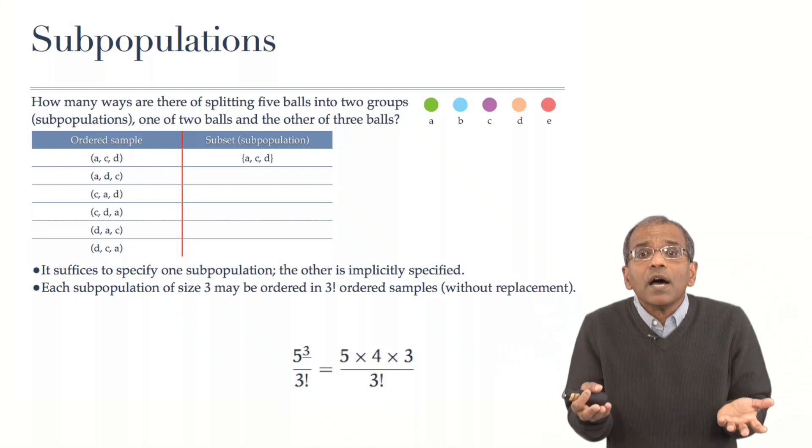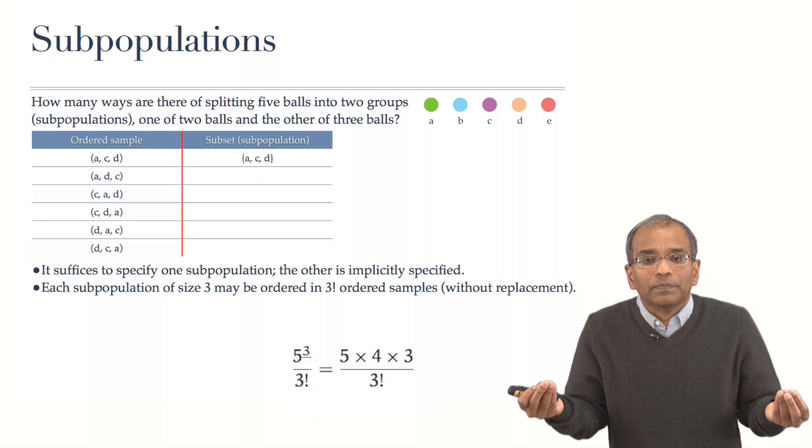This, in our notation, is five to the three falling. And divide that by the repetition, this factor six, or three factorial.